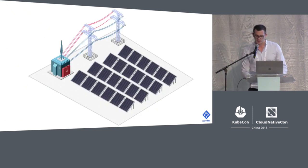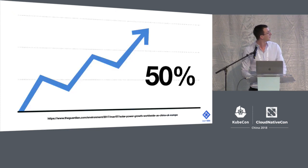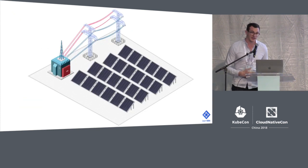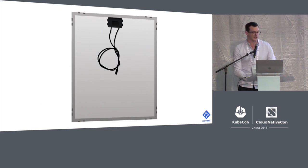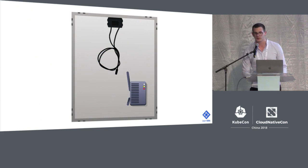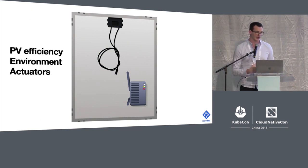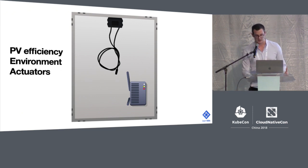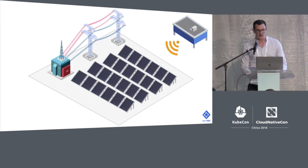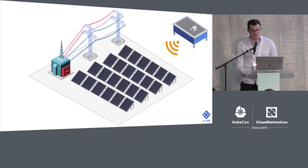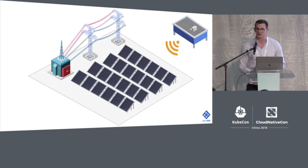What does a solar plant look like? A solar plant looks like this. We have solar panels, and if you flip the solar panel and look at the rear, what you will see is a computer. That computer is in charge of collecting metrics, driving actuators, and checking the voltage. All of this data is sent back to a central location, which sends back messages like how to rotate the solar panel to maximize efficiency.